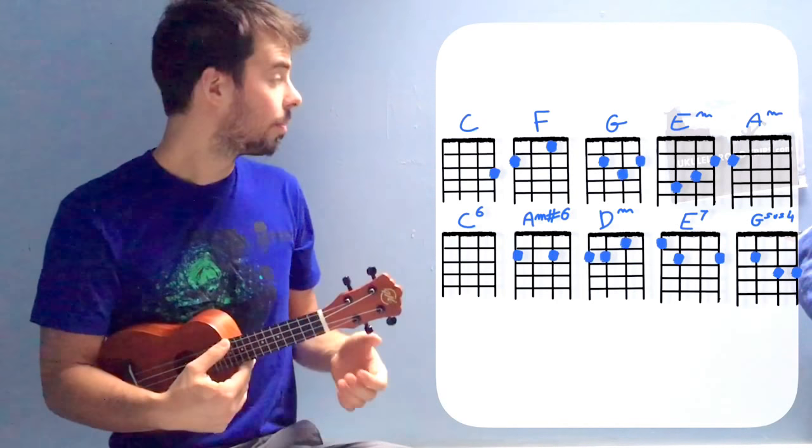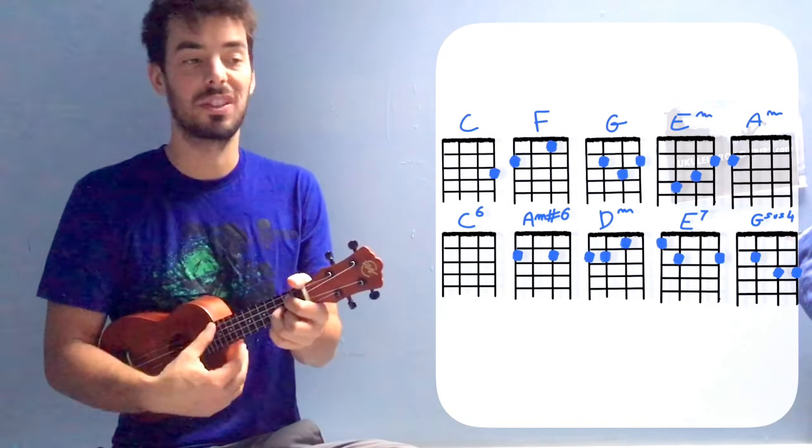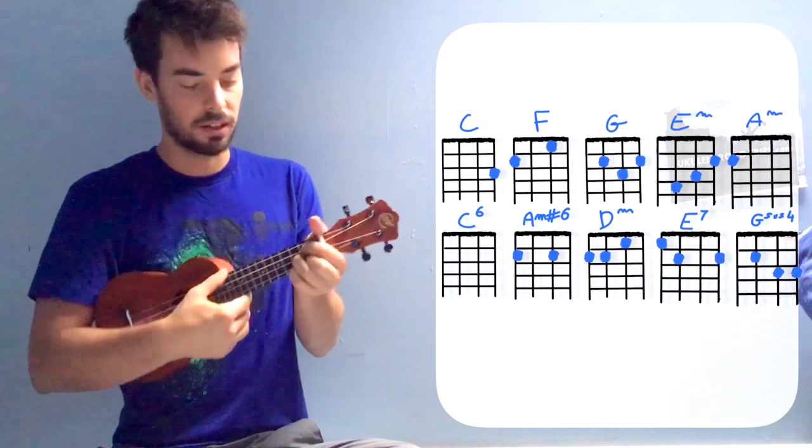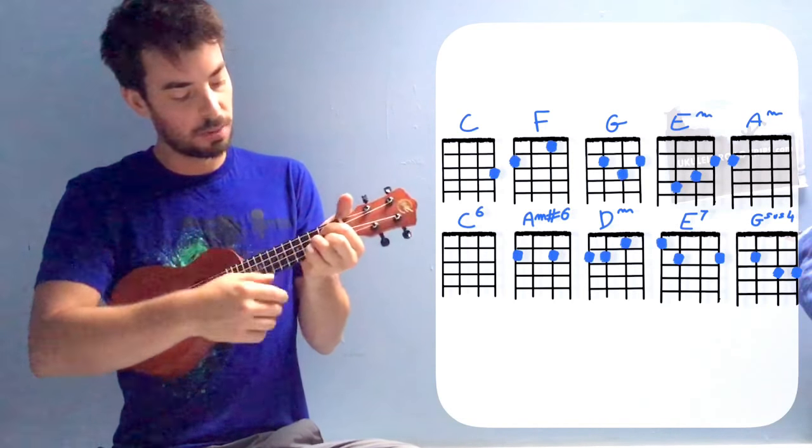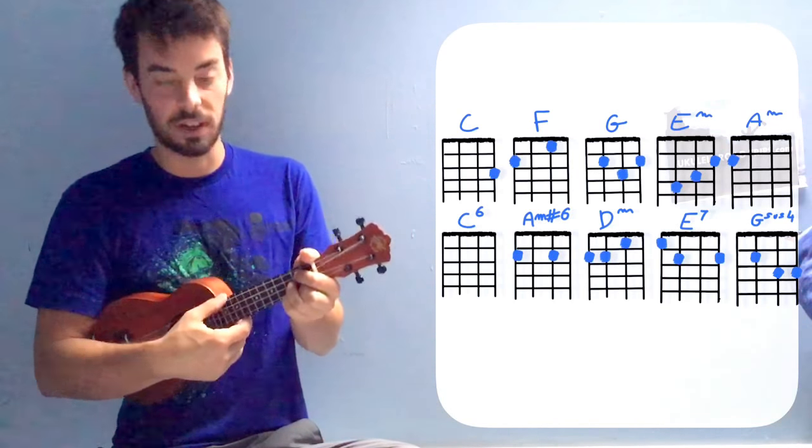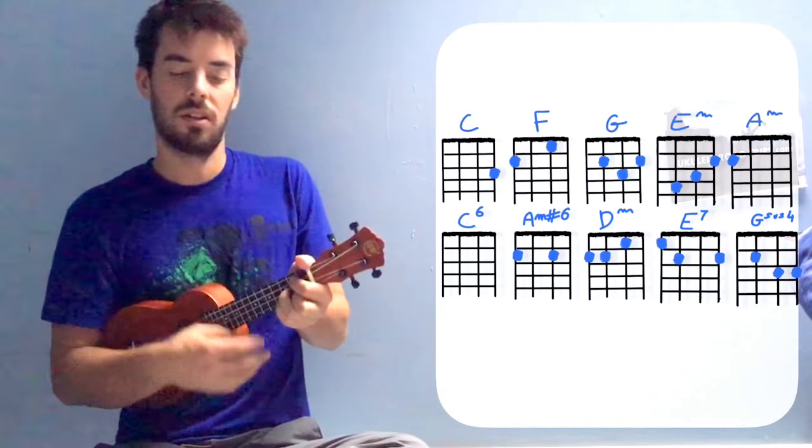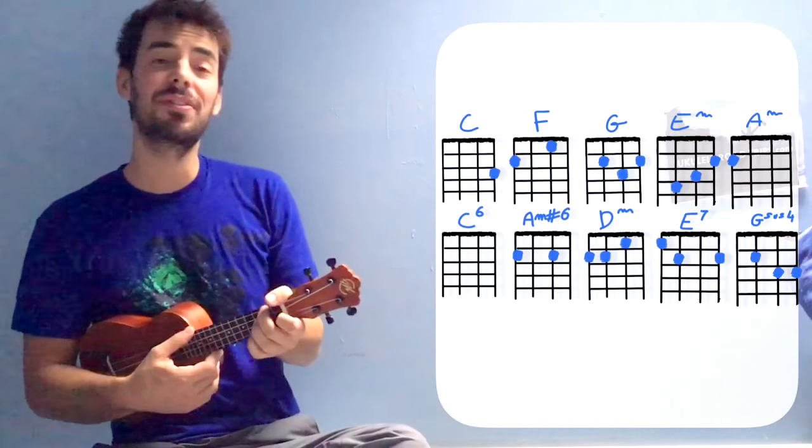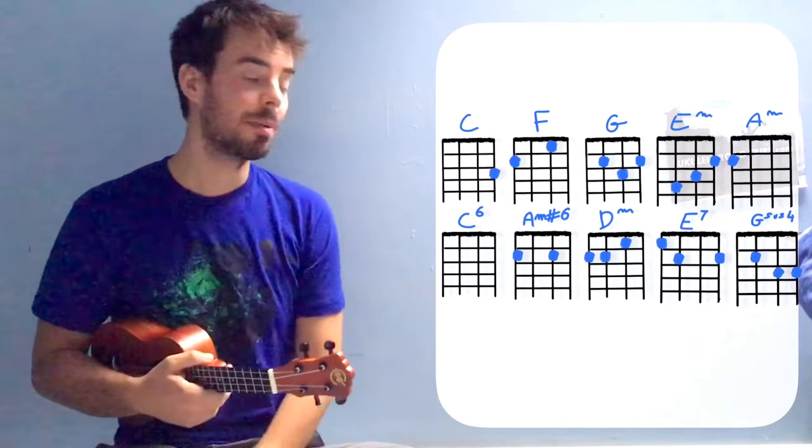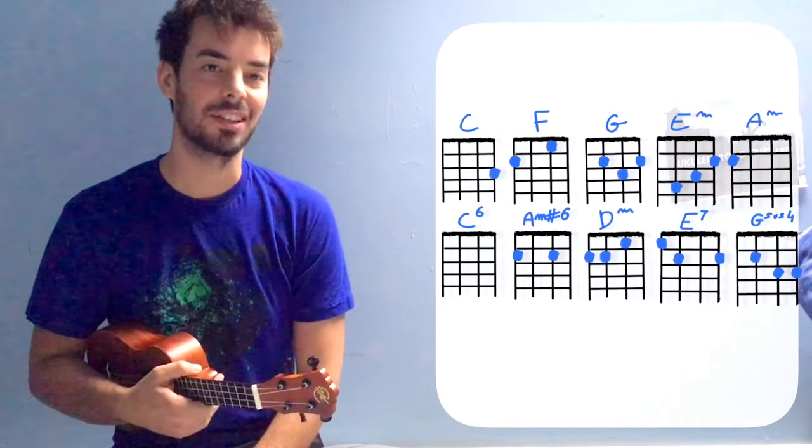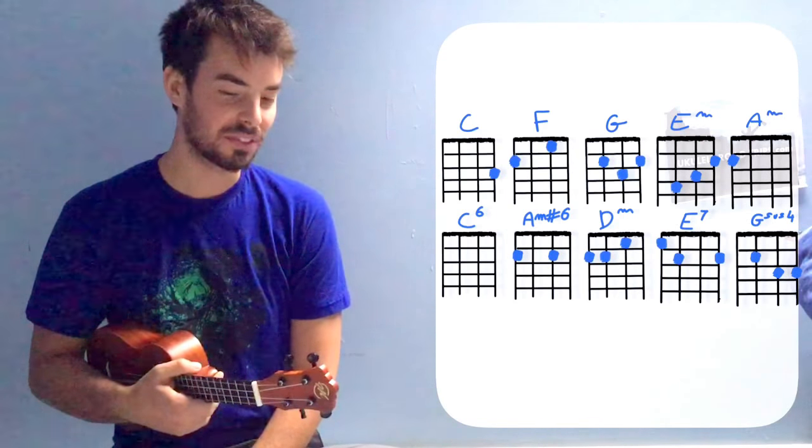And also we're gonna use a little bit of a Gsus4, which is like a G, but with your little finger on the fret just above your middle finger on the last string. It's a little bit funny that there are this many chords, but it really is the case.